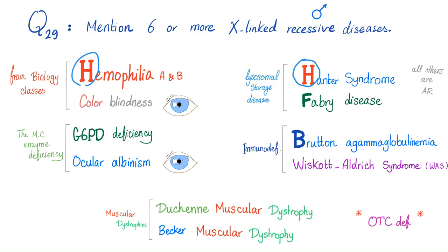Let's talk about genetic congenital immunodeficiency — the inherited immunodeficiency. We have Bruton agammaglobulinemia and Wiskott-Aldrich syndrome. These two are X-linked recessive, therefore they are commoner in males than females. And last but not least, the muscular dystrophies: we have Duchenne and Becker. Usually Duchenne is worse. And just because it doesn't fit in any category, OTC deficiency — ornithine transcarbamylase deficiency.